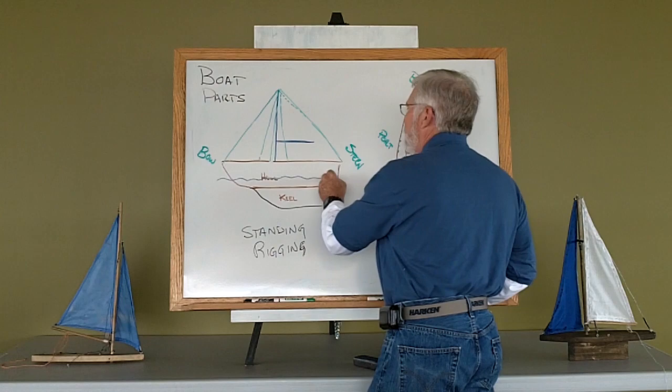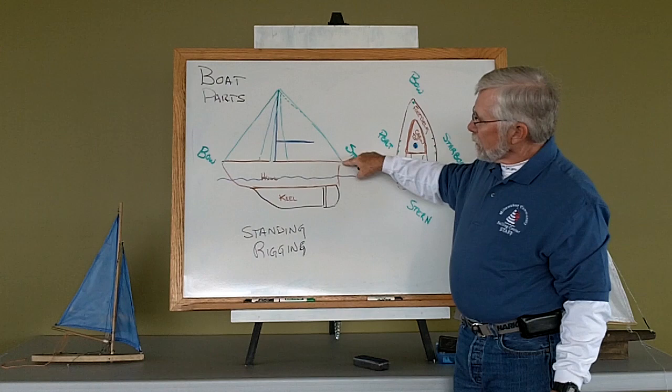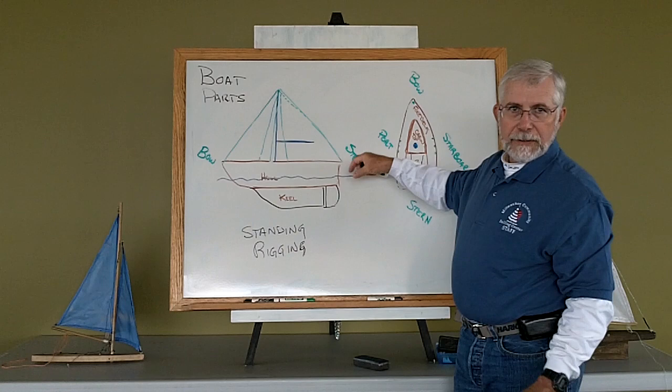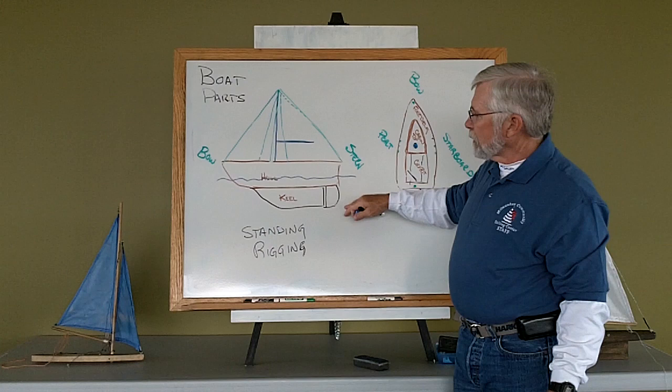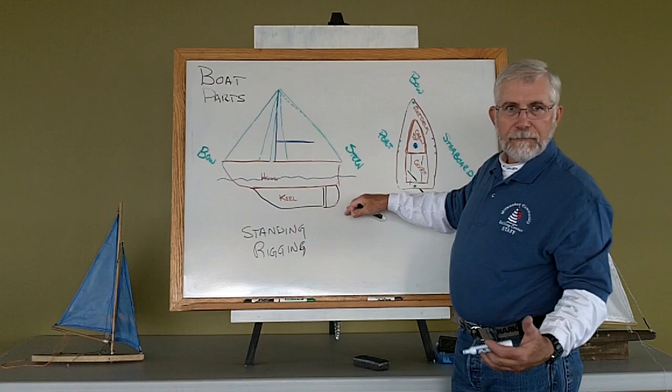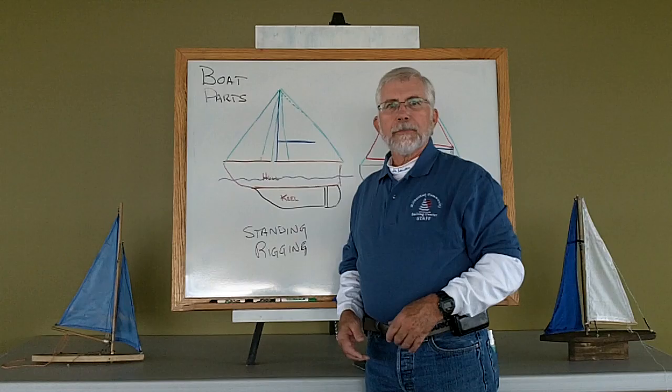When the boat is sitting in the water, the distance between the gunnels, the edge of the boat, and the water line is called our freeboard. It's the amount of free space we have above the water line. And the distance that the boat sits down in the water is called how much draft it draws. It's called the draft. So it could be three foot, three and a half, four foot, depending upon the size of the boat.